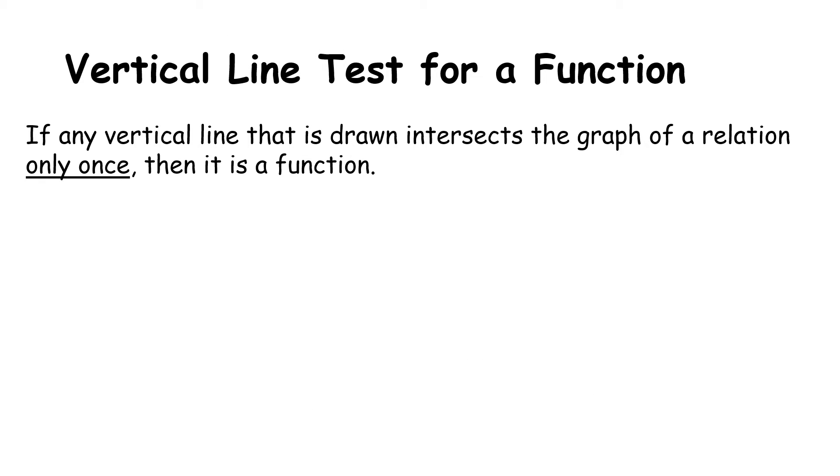Now let's talk about if the function or relation is not given to us in a mapping diagram. What if we're given instead the picture or the graph? We have what's called a vertical line test for a function. If any vertical line that is drawn intersects the graph of a relation only once, then it is a function. If this is not true, so if it intersects it more than once, then we have a problem and it is not a function.